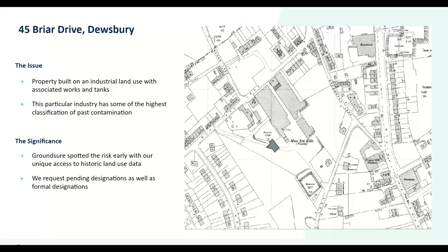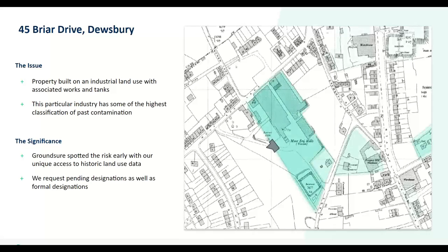Looking at a couple of case studies — you can see on the map the grey box which is the property being searched. This property was built on a site that historic mapping shows was an extensive woolen mill with its associated works and a reservoir tank. This industry has some of the highest classifications of past contamination and is recognized by the local authority as a high priority site for investigation, and could actually be subject to Part 2A liabilities. The teal box shows the extent of the whole old industrial estate that the property is built on.